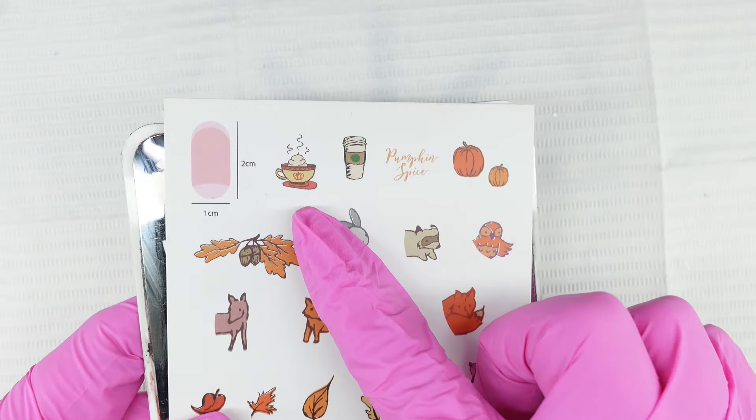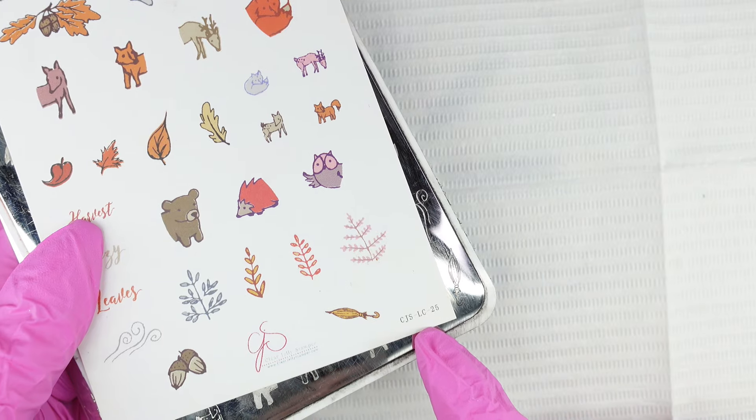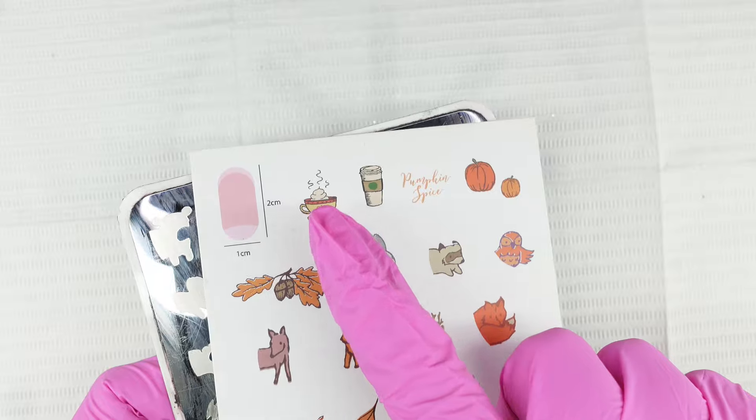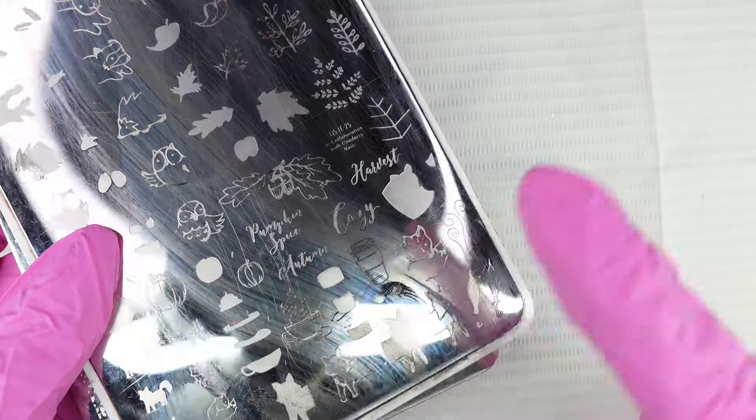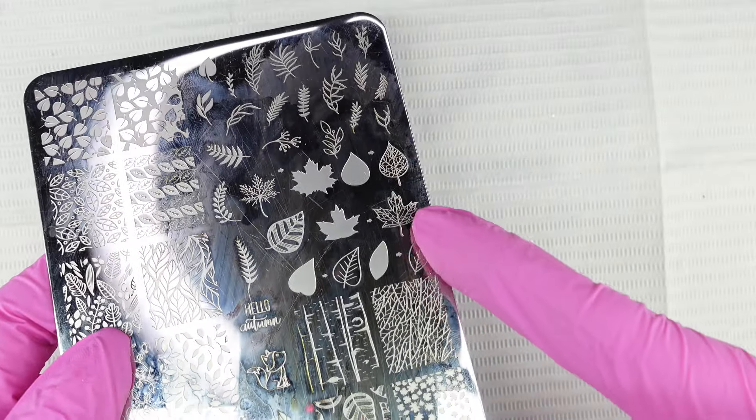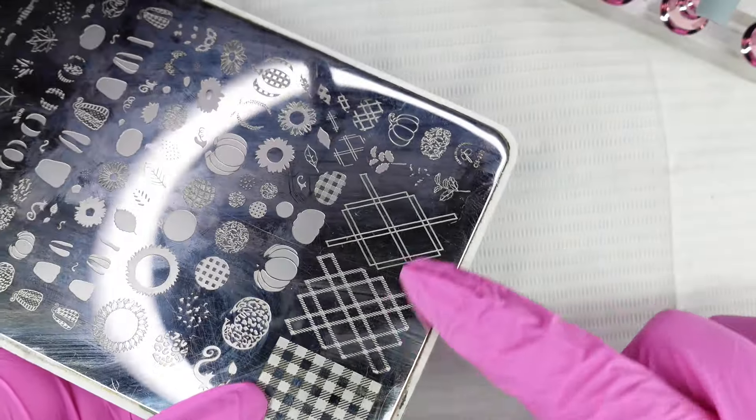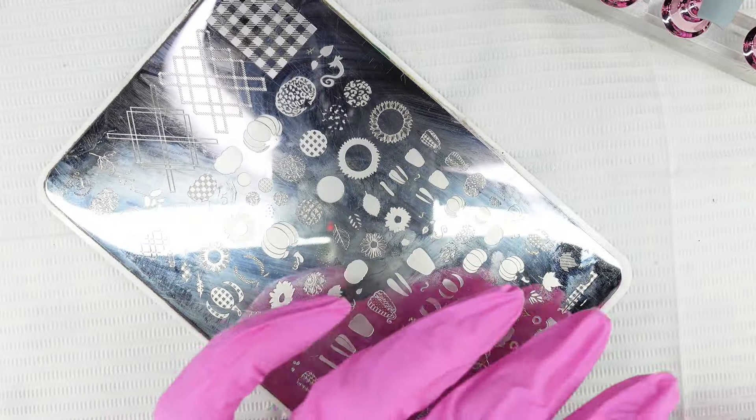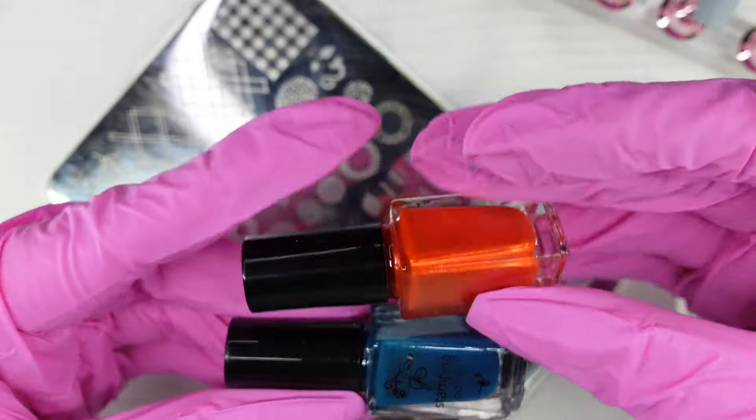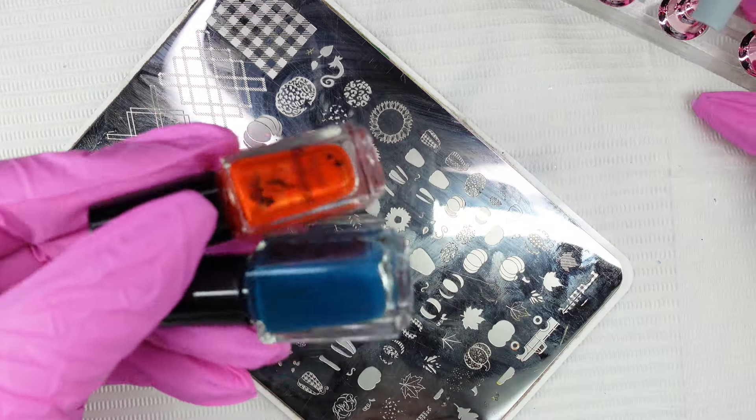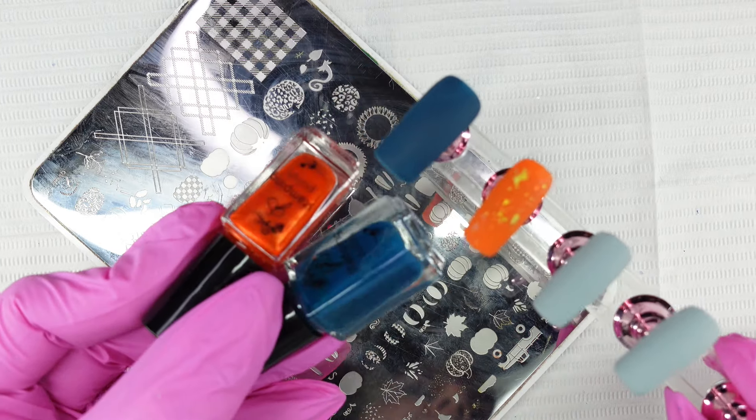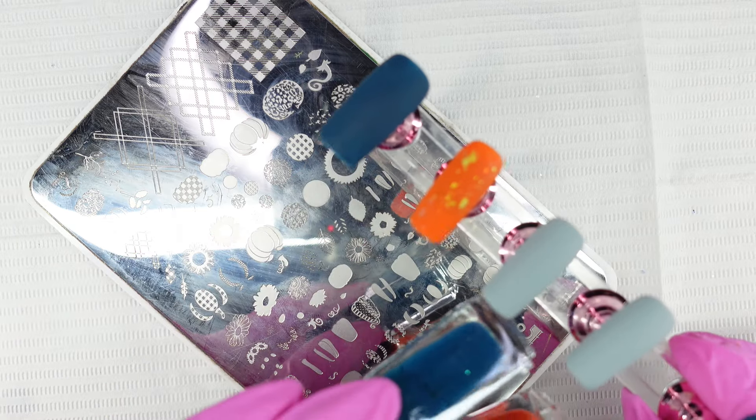Also, I dug out two more stamping plates because I was looking back at that picture. And it had a pumpkin spice latte on there. So I actually found this stamping plate. It's CJS LC25 and it has like a cup image. So I thought we would do that. But I think I'm just going to stamp the outline and color it in with my red watercolor pen. And I also found those leaves as well.